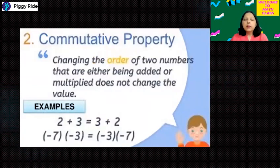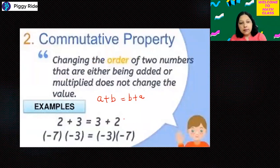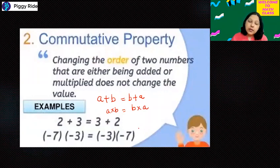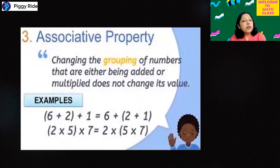Commutative property means when you change the order of two numbers — if you have two integers a and b, whether you add a with b or add b with a, the answer is always the same. Integers are commutative under addition. Integers are commutative under multiplication also — whether you multiply a with b or b with a, the answer will be the same.